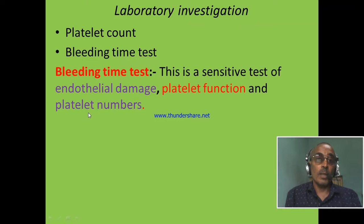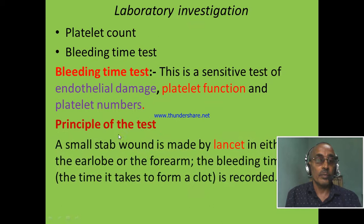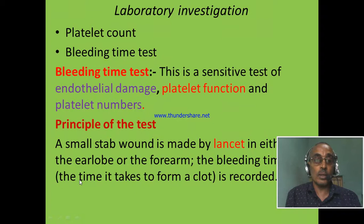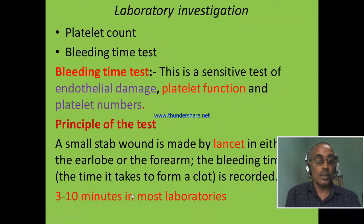The bleeding time test is a sensitive test used to evaluate endothelium damage, platelet function, and platelet numbers. Principle of the test: A small stab wound is made by puncturing with a lancet either on the earlobe or the forearm, and the time interval will be recorded and reported to the physician. The normal value is 3 to 10 minutes. If the blood flows for more than 10 minutes, we can say that the patient has a bleeding disorder.